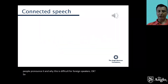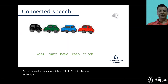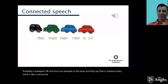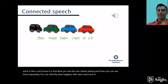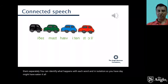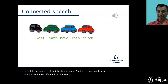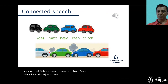Before I show you why this is difficult, I'll give you a metaphor. In isolation, every word is like cars waiting in a line — you can see them clearly and separately, and identify each word. So you have 'they — might — have — eaten — it — all,' but that is not natural; that is not how people speak. What happens in real life is a little more chaotic — more like a massive collision of cars, where words are so close together that it's difficult to distinguish where one finishes and another starts.